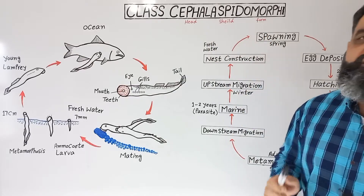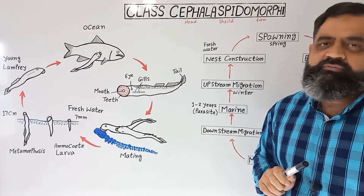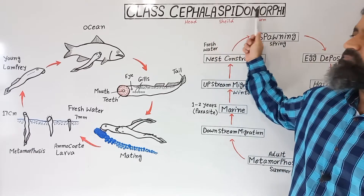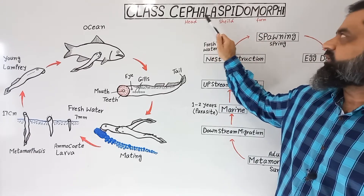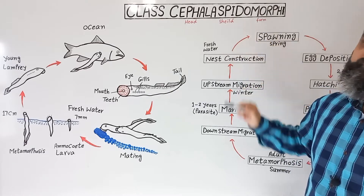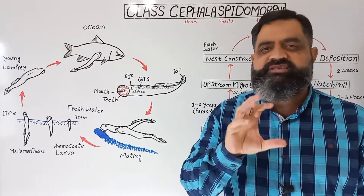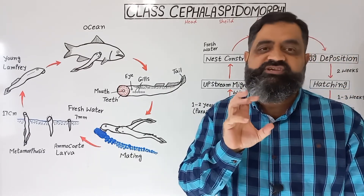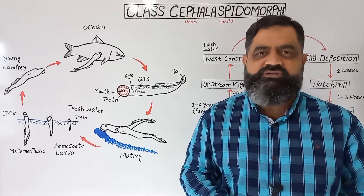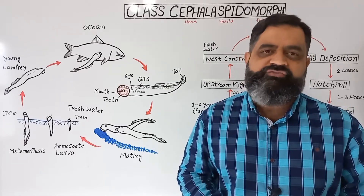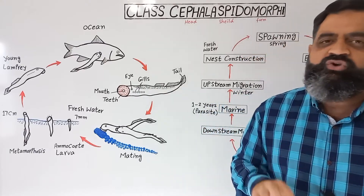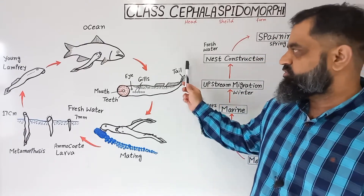If we look at the literal meaning of Cephalaspidomorphae: cephala means head, aspedo means shield, morphe means form. It means their body has a head in the form of a shield or protective layer. So they are a very special kind of fish which are found in marine water.